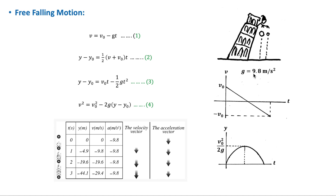A freely falling motion is motion along a straight line, and we take it to be along the y-axis, where the positive direction is upward and the object moves either upward or downward. It is a one-dimensional motion with constant acceleration.